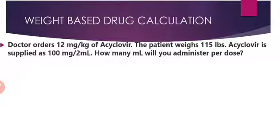Our first problem states that the doctor orders 12 mg per kg of acyclovir. The patient weight is 115 pounds, and acyclovir is supplied as 100 mg per 2 ml. So how many ml will you administer per dose? The desired amount is 12 mg per kg, which means the requirement per 1 kg is 12 mg.